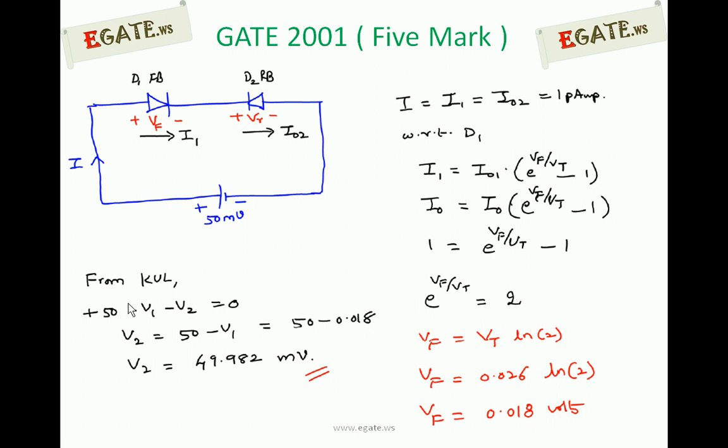Plus 50 minus V1 minus V2 equals 0. V1 is Vf, V2 is Vr. So V2 equals 50 minus V1, which is 50 minus 0.018. So V2 equals 49.982 millivolts, which is approximately equal to 50 millivolts.